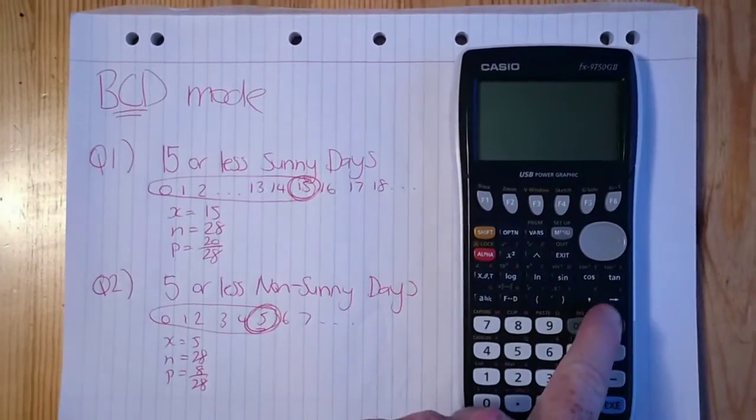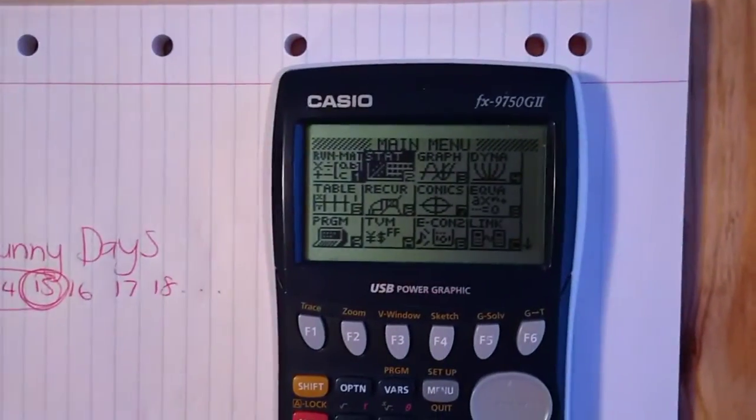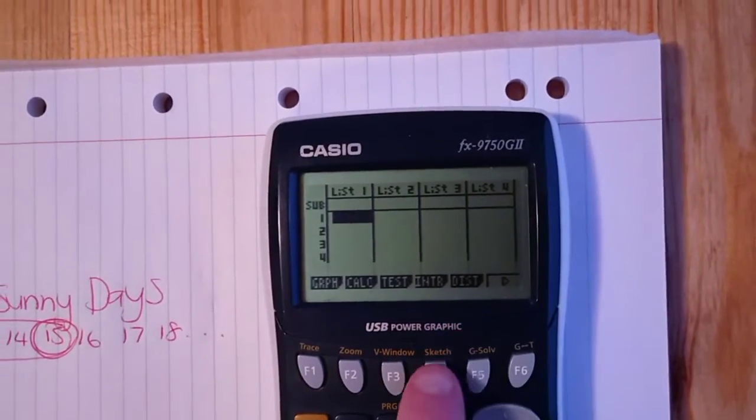So first step as always, let's make sure we turn that on. And when we're in stats mode, that's number two, we then go to distributions, F5.